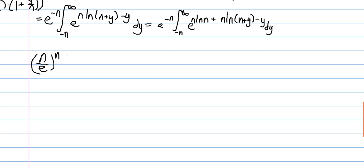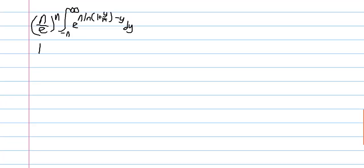So, we get n over e to the n times the integral, and then we just have e to this stuff. And, my apologies, I had n plus y written here. It's 1 plus y over n. So, now we have this integral. And now, we consider the power series expansion of the natural log of 1 plus u. I'm not going to prove this, but this is equal to u minus u squared over 2 plus u cubed over 3 minus dot dot dot. So, it's basically just u to the n over n alternating over positive integers n.